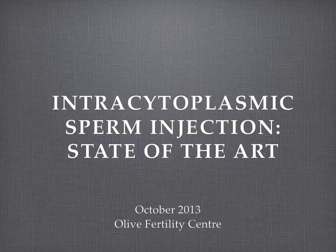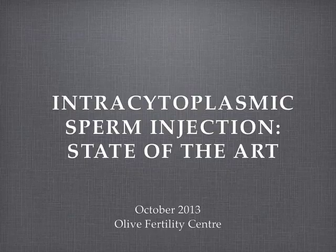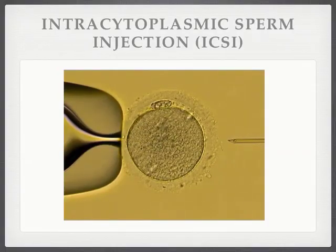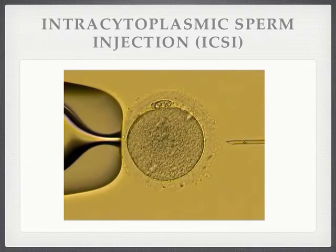At fertility programs, women are given gonadotrophins for about 10 or 11 days, causing multiple eggs to grow, which are then harvested transvaginally and fertilized. Fertilization can occur with standard insemination — placing one egg with about 50,000–60,000 sperm — or with ICSI, which is required in cases like azoospermia. ICSI has a higher fertilization rate than standard insemination even with good quality ejaculated sperm. With ICSI, a single sperm is loaded into a glass pipette and injected directly into the egg.